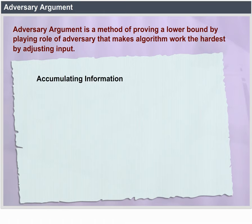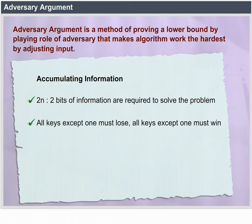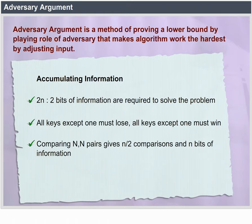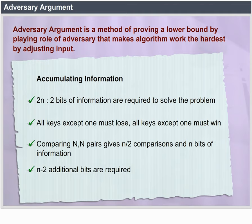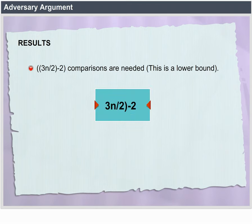Accumulating information: 2N − 2 bits of information are required to solve the problem. All keys except one must lose, and all keys except one must win. Comparing N/2 pairs gives N/2 comparisons and N bits of information. N − 2 additional bits are required, one comparison each. Results: 3N/2 − 2 comparisons are needed. This is the lower bound.